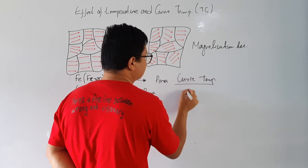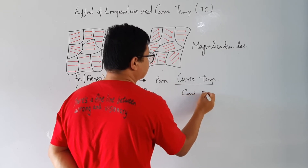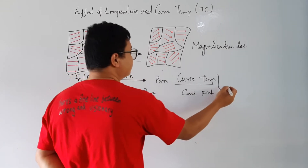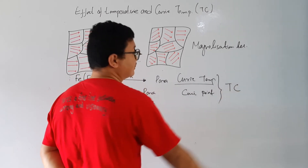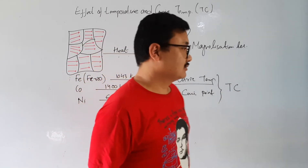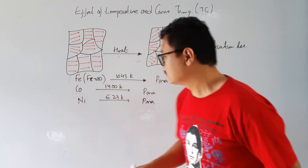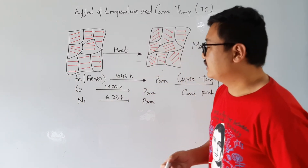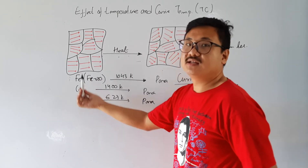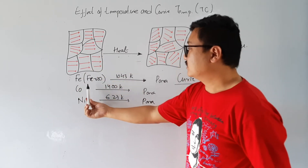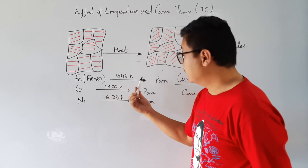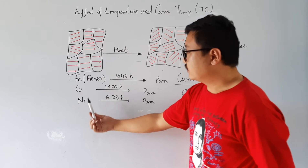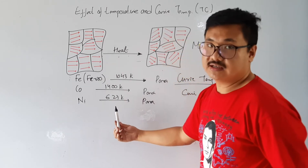This temperature is also called the Curie point, and in short we denote it as T_C. So the Curie temperature is that temperature at which a ferromagnetic material converts into paramagnetic. For iron it is 1043 Kelvin, for cobalt it is 1400 Kelvin, and for nickel it is 627 Kelvin.